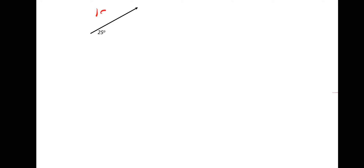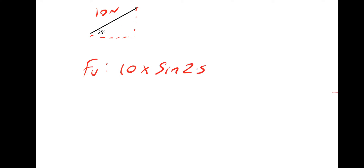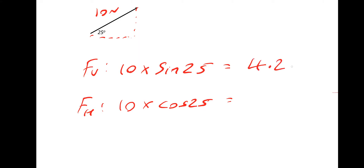Another example: 25 degrees from the horizontal, a force of 10 newtons. Calculate the horizontal and vertical components. Make the triangle. Force vertical is simply the magnitude — 10 — multiplied by sine 25, because the vertical component is opposite to the angle. The horizontal component is the magnitude multiplied by cos 25, because it's adjacent to the angle. The vertical force is 4.2 newtons, and the horizontal force is 9.1 newtons.